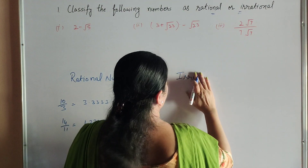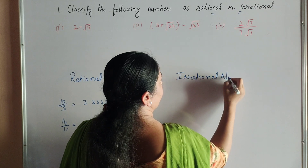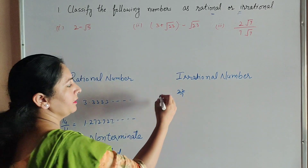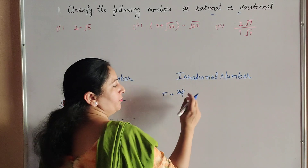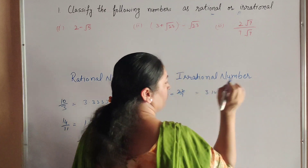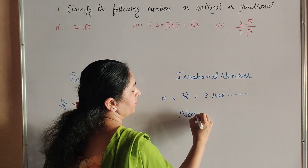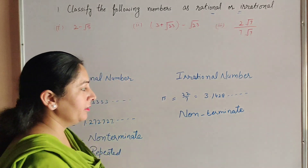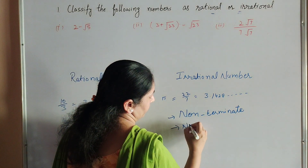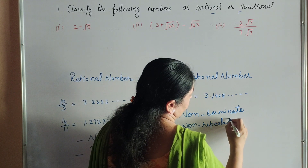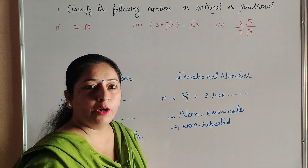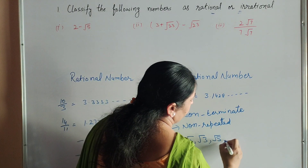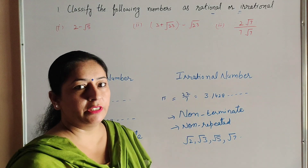Now we move to irrational numbers. Let me take an example: 22 over 7, which is the value of pi. Pi is equal to 22 over 7. So 22 divided by 7 gives the answer 3.1428 and so on. This number is non-terminating — it is never ended, this division is continuous — and second, it is non-repeated. So all numbers that are non-terminating and non-repeated are irrational numbers. Square root 2, square root 3, square root 5, and square root 7 are irrational numbers.